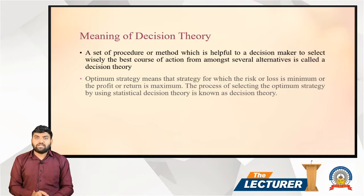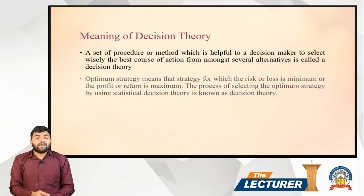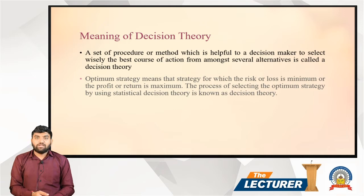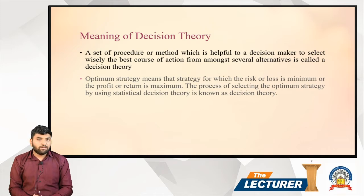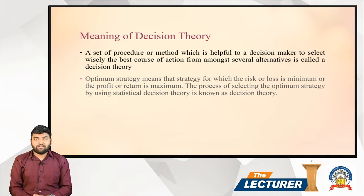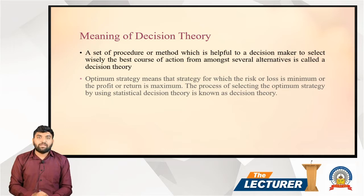Now you must decide which is less costly and less time consuming. With your personal vehicle, it is moderately costly but more time saving. A rickshaw is a little more costly than a personal vehicle and also time consuming, because the rickshaw stops for passengers along the way. With the bus, it is less costly but more time consuming due to traffic. When you have one or more alternatives, this statistical tool called decision theory is used.